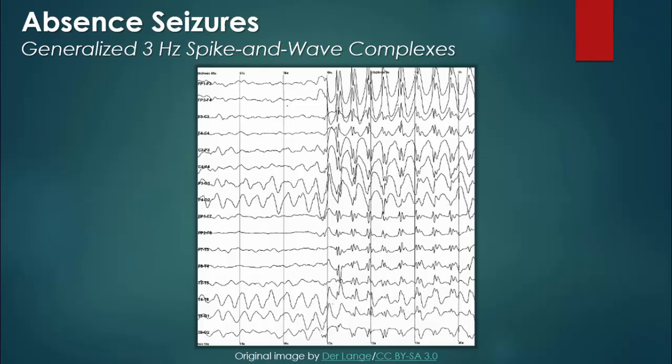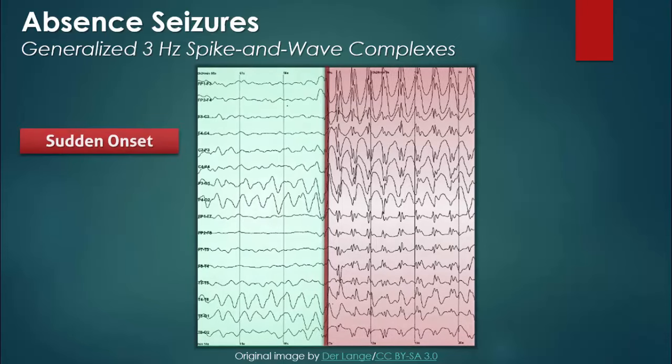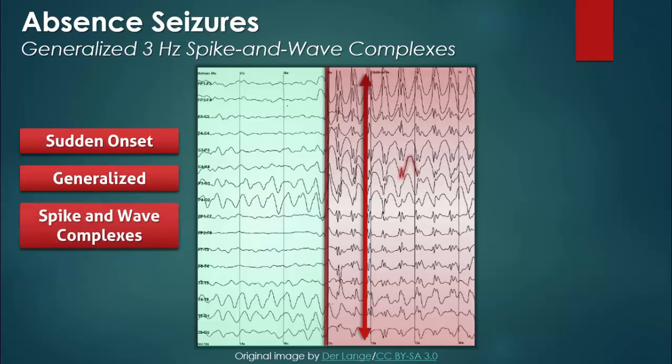To quickly summarize, the characteristic EEG findings in a patient experiencing an absence seizure include the sudden onset of generalized discharges consisting of spike-and-wave complexes occurring at a rate of approximately three per second.